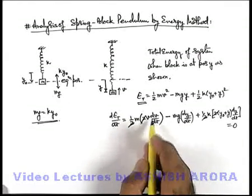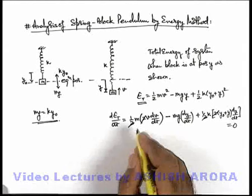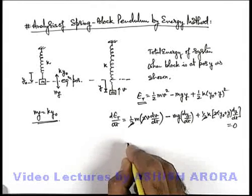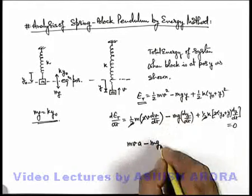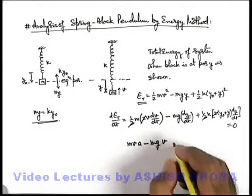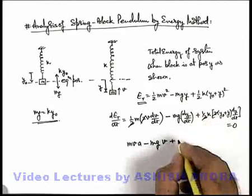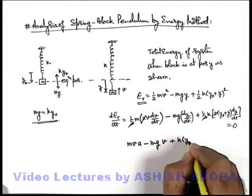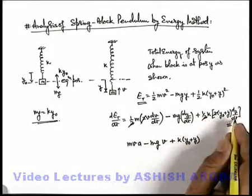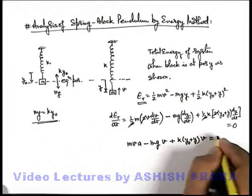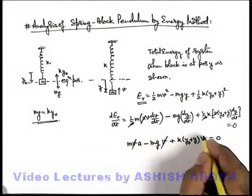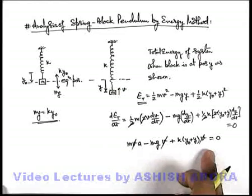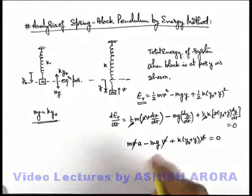And if we just write it once again, first term dv/dt can be written as acceleration of mass. So it can be written as mva - mg, dy/dt can be written as its speed, plus k(y₀ + y) and dy/dt can be written as v. This should be equal to zero. Here in this expression v will also get cancelled out throughout the term.